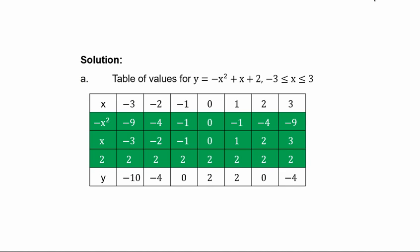Solution. Part A of the question is to copy and complete the table of values. Already, the values of x are known. For us to get y values, you need to get minus x squared, then x values remain the same for this. Plus 2 is a constant which is written under each value of x. So you start with minus x squared.